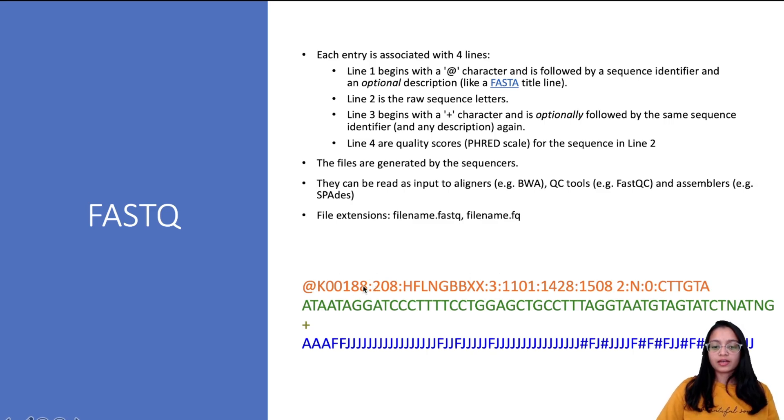The description line gives us information about the instrument type, the run ID, the flow cell ID, and so on. The second line is the actual nucleotide sequence.